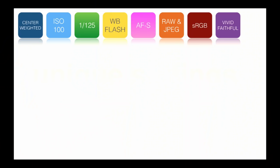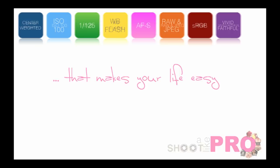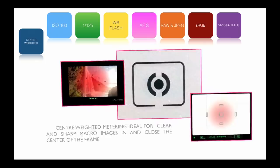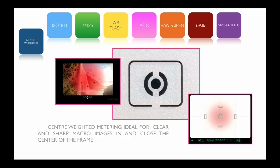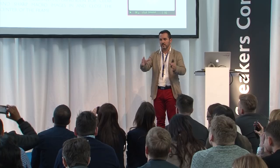Center-weighted metering is about how the camera measures the light. It's recommended for static photography, such as dental photography, because dental photography is static — the patient is usually sitting on a chair, calm and relaxed, and you can shoot.